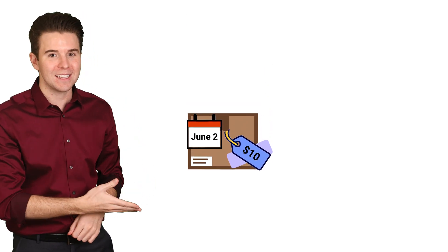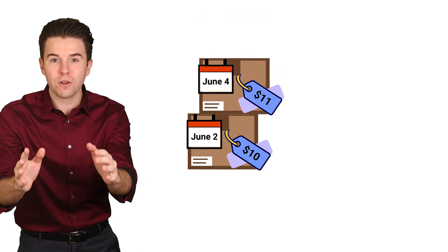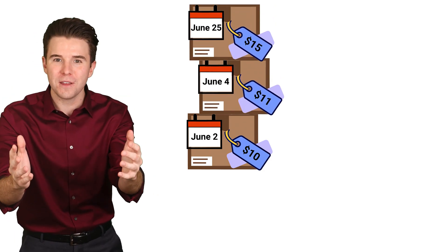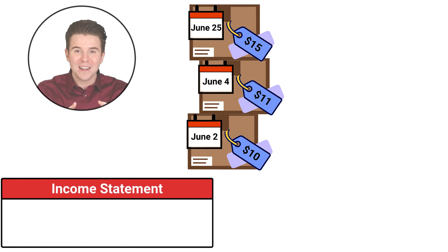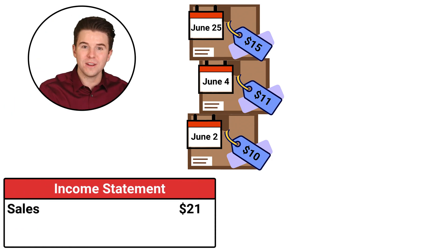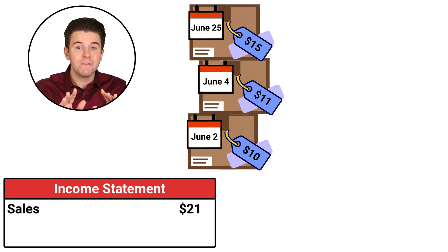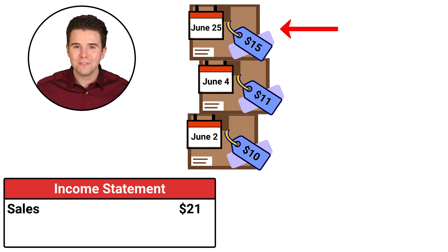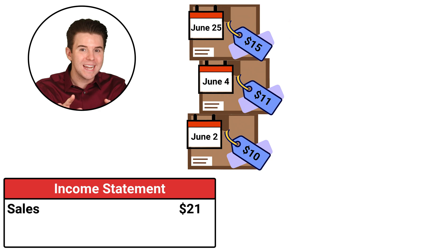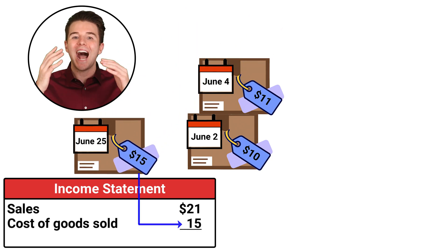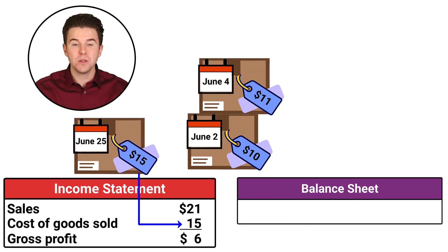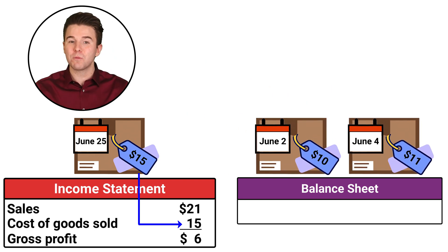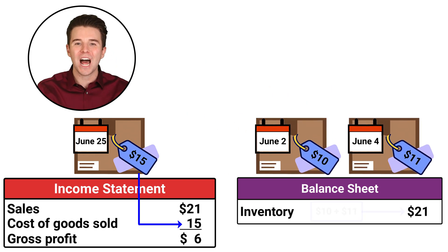For example, let's say a company bought three identical units of inventory: one unit on June 2nd for $10, one unit on the 4th for $11, and one unit on the 25th for $15. On June 28th, we sold one unit for $21. Using LIFO, the last or most recent unit purchased — which was on June 25th for $15 — is reported as cost of goods sold on the income statement. The other two remaining units for $10 and $11 get reported in inventory on the balance sheet.